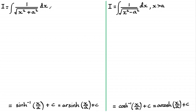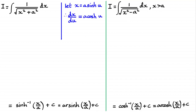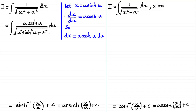For this first integral I'm going to use a substitution: let x equal a·sinh(u). Differentiating with respect to u gives dx/du equals a·cosh(u), so dx equals a·cosh(u) du. Substituting for dx, we get a·cosh(u) du all over the root of a squared·sinh squared u plus a squared.